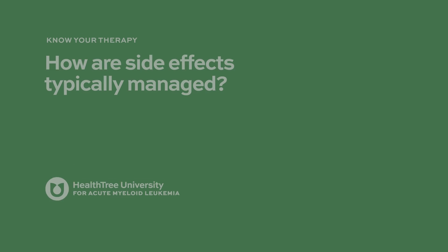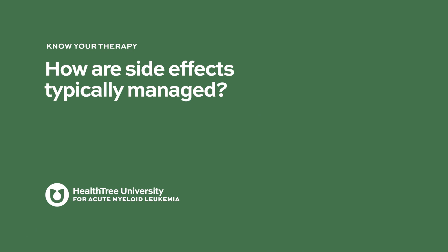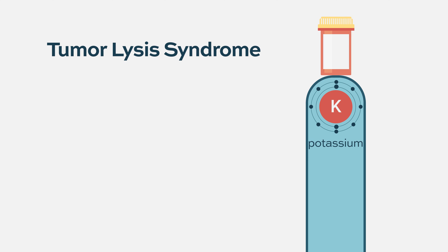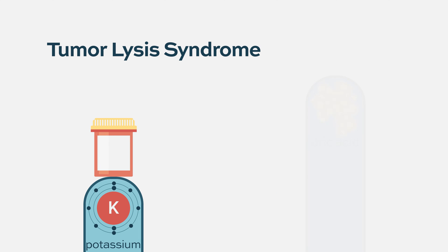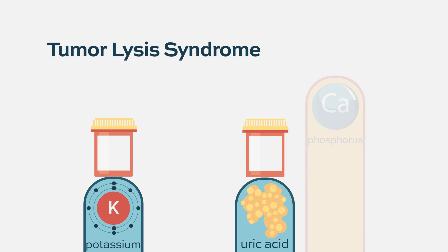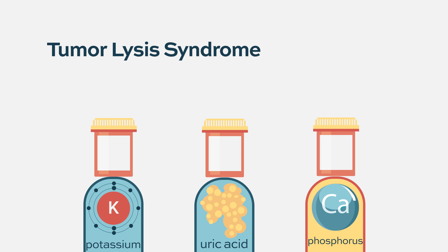How are side effects typically managed? For tumor lysis syndrome, if potassium is high we have special medications to bring it down and repeat labs a few hours later. It's not just potassium — sometimes uric acid is elevated, which we also see when there's a lot of leukemia in the blood. We use prophylactic agents that reduce uric acid regardless of therapy. Patients usually have to drink a lot of fluids to wash out the cellular debris. Phosphorus is another component that is easily managed.